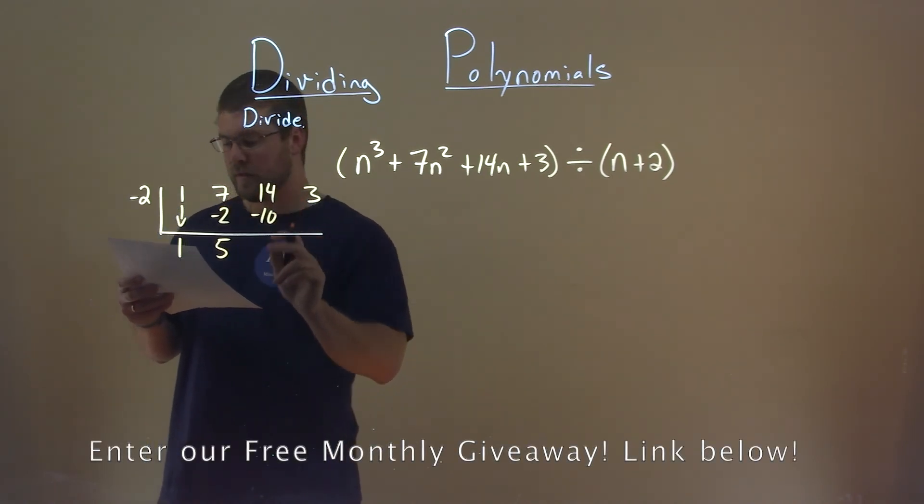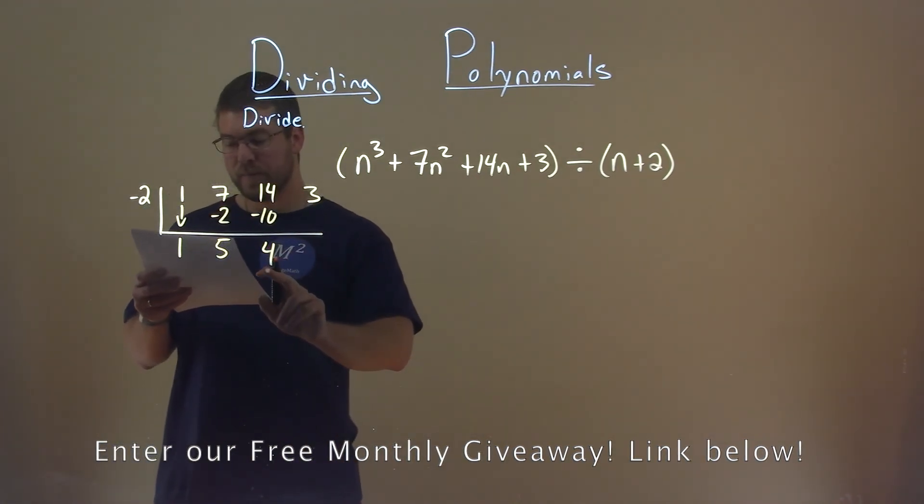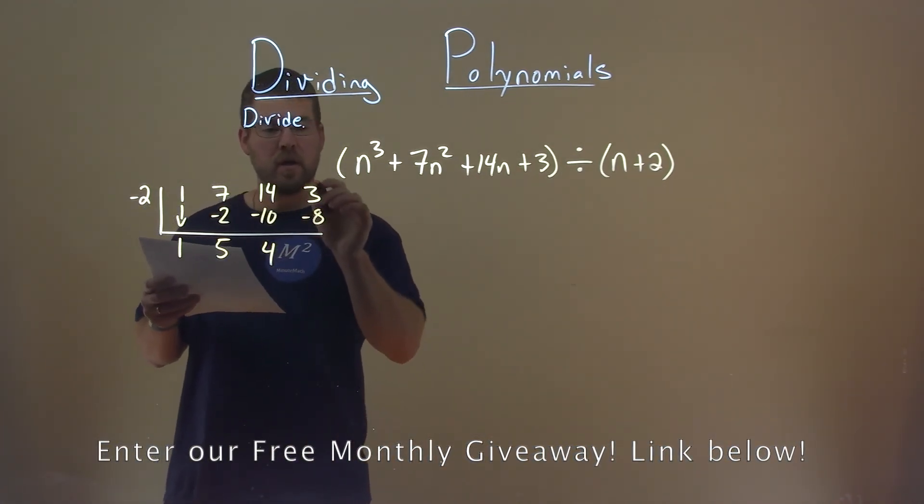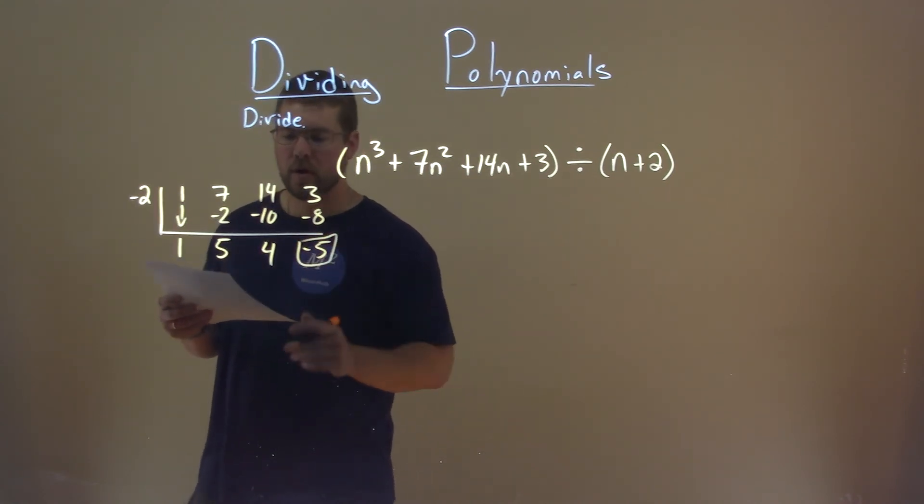14 plus a negative 10 is a positive 4. Negative 2 times 4 is a negative 8. 3 plus a negative 8 is a negative 5, and that's our remainder.